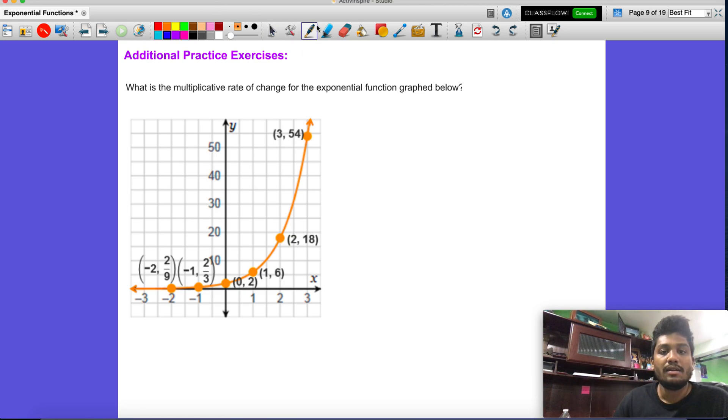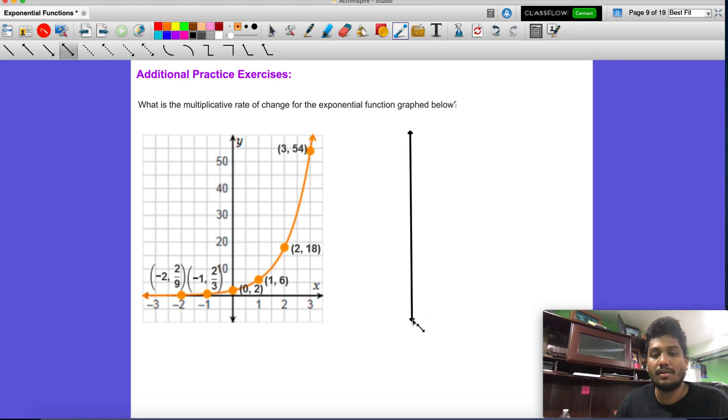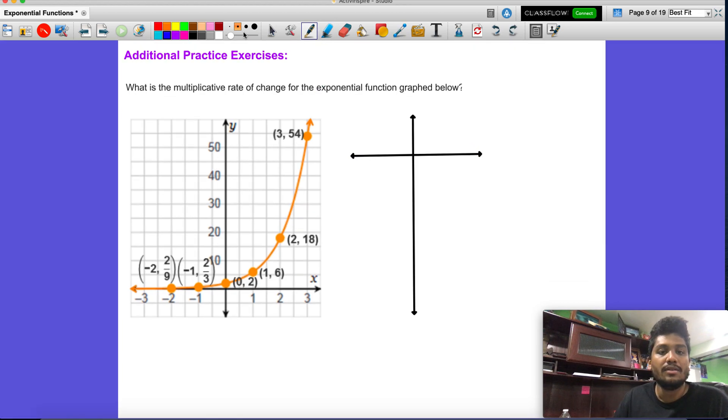All right, so same thing we'll do here. Oh man, that's why I make lines. So let's make them really quickly. So we have now x and y and I'll just choose anything. So let's choose from zero, one, two, three, and then what was that? One comma six, 18, and 54.